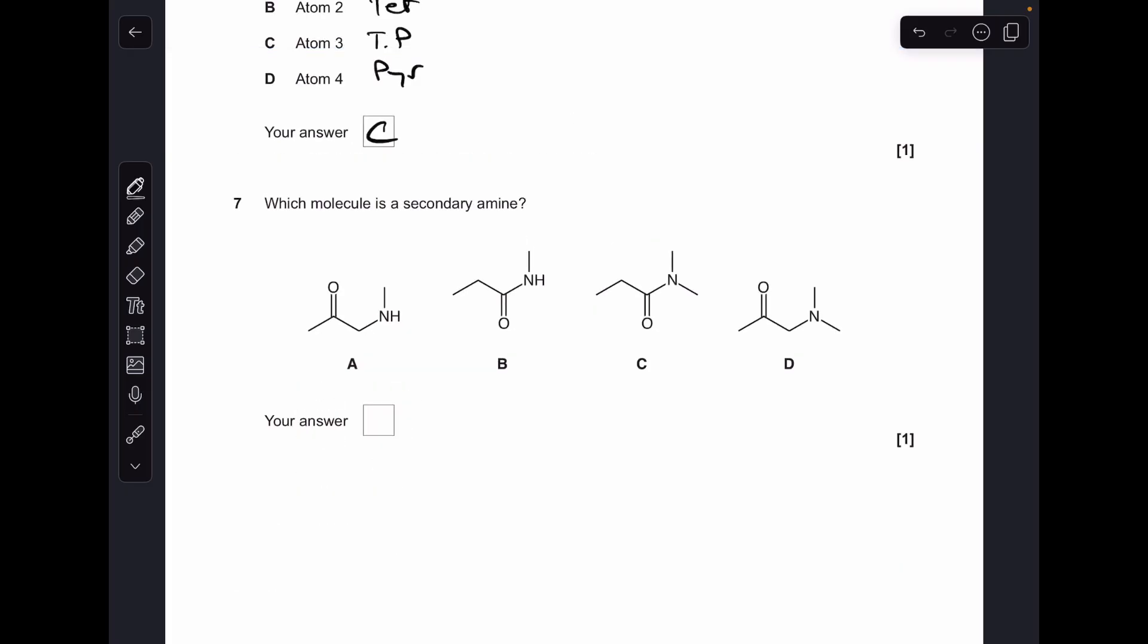Number seven. Which molecule is a secondary amine? I'm going to rule out B and C straight away because they're both amides, because the C double bond O is directly bonded to the nitrogen. So we're left with A and D. Secondary amines have two carbon groups bonded to the nitrogen, so it's A. D is actually a tertiary amine.